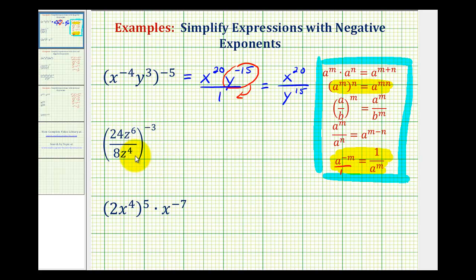Now, taking a look at our second example, we want to simplify inside the parentheses first. Well, 24 divided by 8 would be 3. And then z to the 6 divided by z to the 4th.